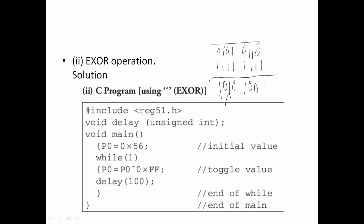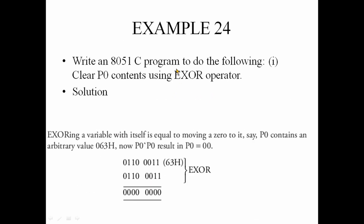If we have the same thing, we will have the opposite. So if we have XOR applied repeatedly, we get XOR again. For example, write an H051C program to do the following: Clear P0 content using XOR operator. If we have a number in P0 and apply XOR — if P0 XOR P0, they are the same, so we get a clear value of zero.